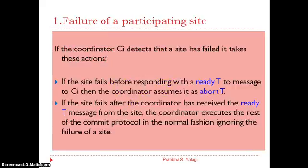Starting with the first one: failure of a participating site. If the coordinator detects that a site has failed, it takes action based on two possibilities. If the site fails before receiving the ready message, the coordinator takes the decision of aborting the transaction. But if the site has received the ready message and then failed, the coordinator executes the rest of the commit protocol in a normal fashion, ignoring the failure of the site.